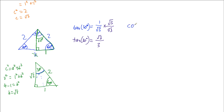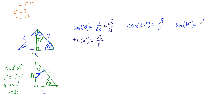For cosine of 30 degrees: cosine is adjacent over hypotenuse. The adjacent side to 30 degrees is root 3 and the hypotenuse is 2, so cosine of 30 degrees is root 3 over 2. For sine of 30 degrees: sine is opposite over hypotenuse. The opposite side to 30 degrees is 1 and the hypotenuse is 2, so sine of 30 degrees is one half.